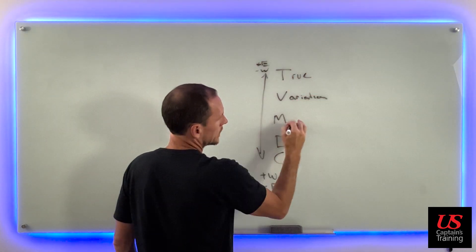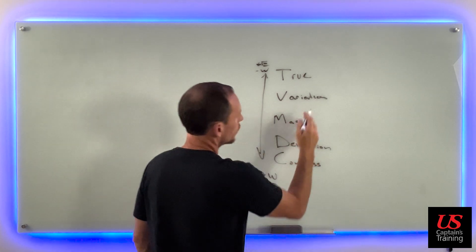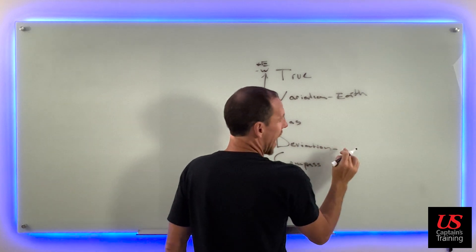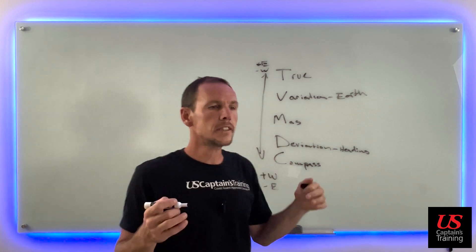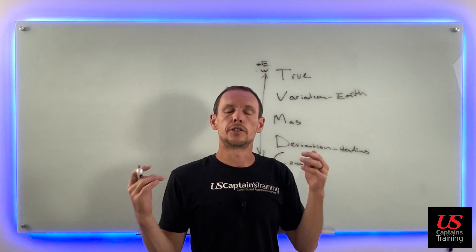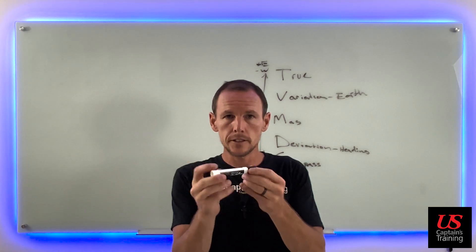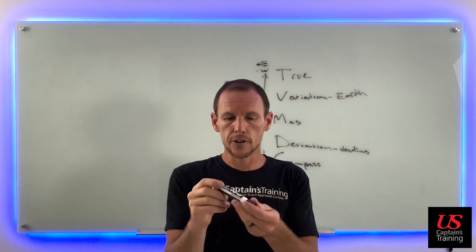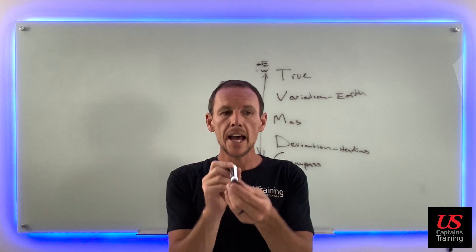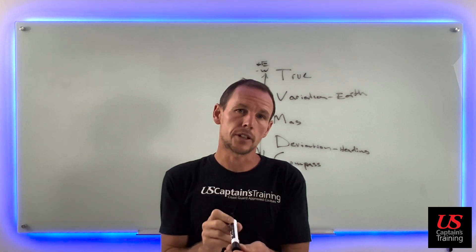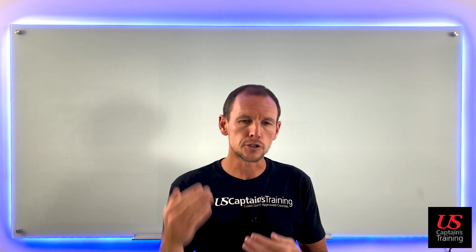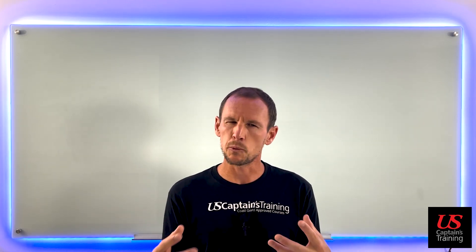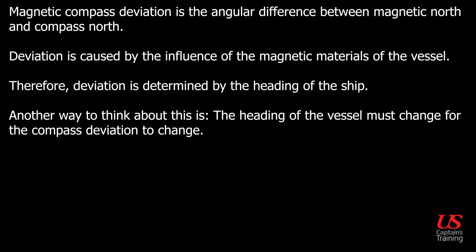So in TVMDC: T is degrees True, V is Variation, M is Magnetic, D is Deviation, and C is Compass. Variation is where you are on Earth; deviation depends on the heading of the ship. There's a magnetic condition of your ship that affects your compass, and as your heading changes, the ship rotates about your compass. Deviation — magnetic compass deviation — is the angular difference between magnetic north and compass north.